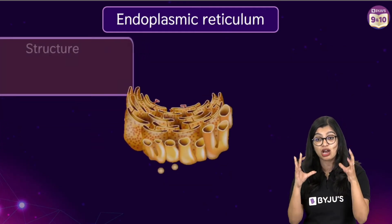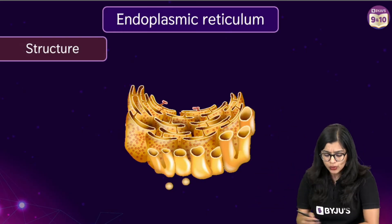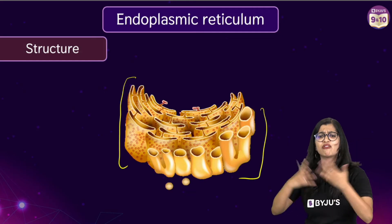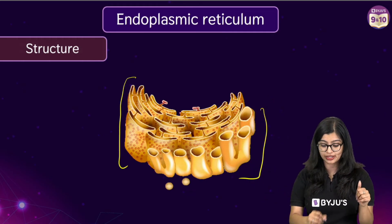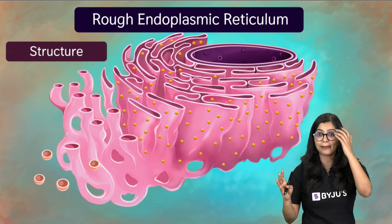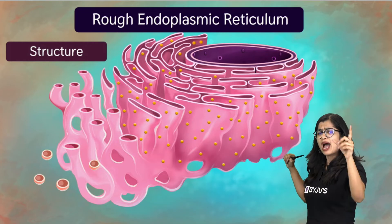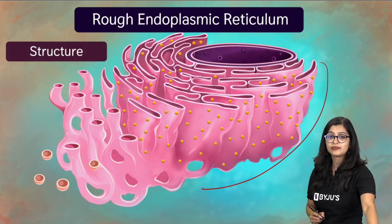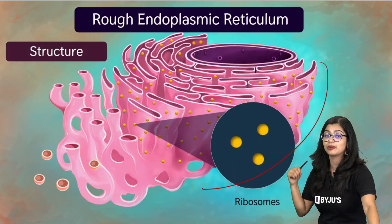If you look at the structure in closer detail, the full endoplasmic reticulum does not look the same. One part of it has certain structures on its surface and the other part is devoid of anything and looks quite different. This is because there are two kinds of endoplasmic reticulum: we have the rough ER and the smooth ER. Now the rough endoplasmic reticulum — why is it called rough? Because there are certain structures present on its surface, and these structures are ribosomes.